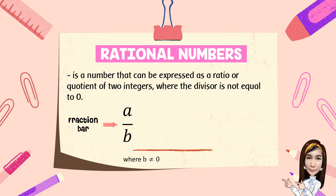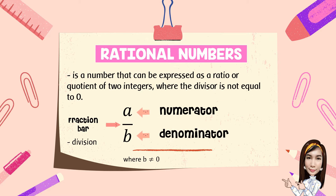The line is what we call the fraction bar, which denotes division. A is the numerator, referring to the number above the fraction bar. And B is the denominator, referring to the number below the fraction bar.